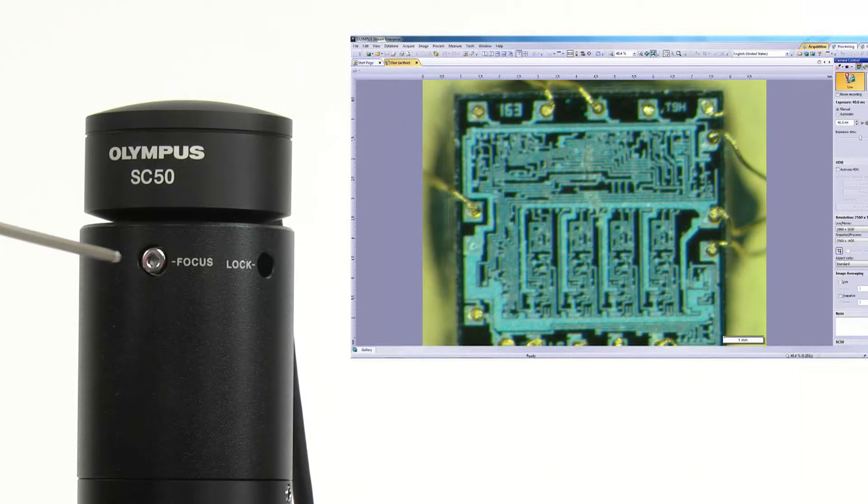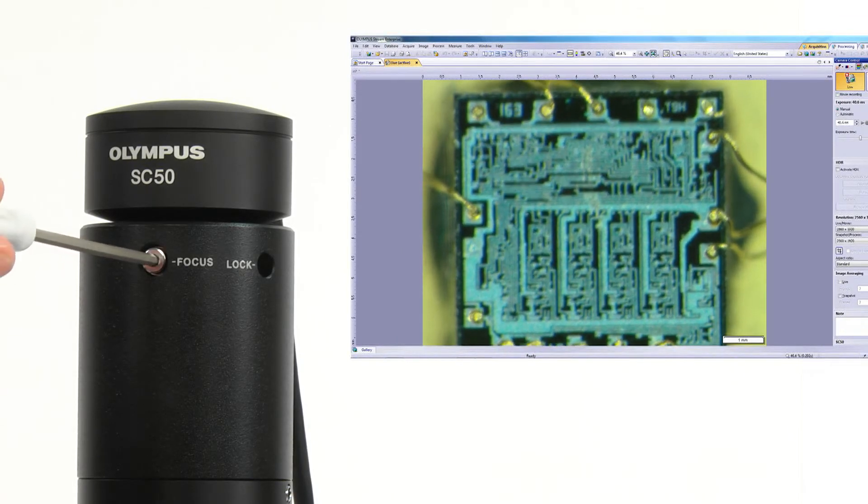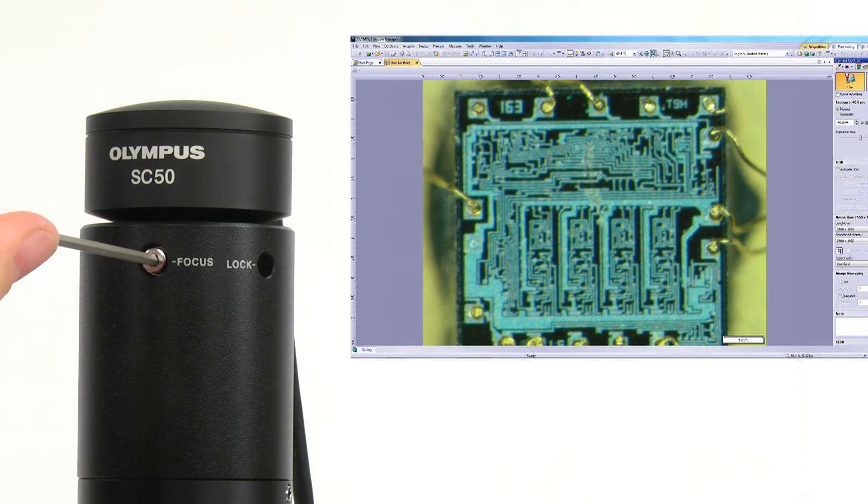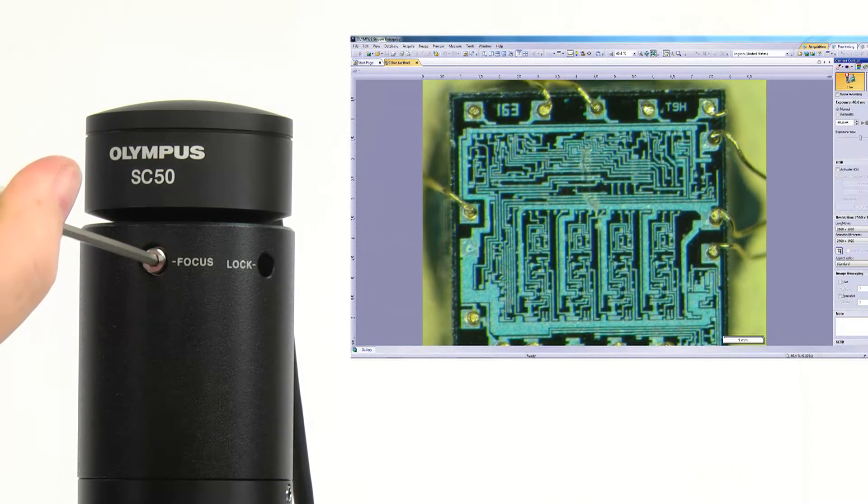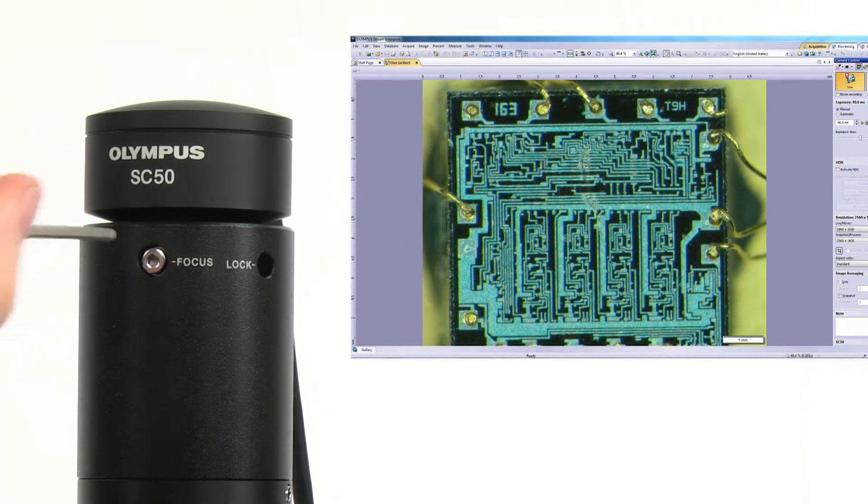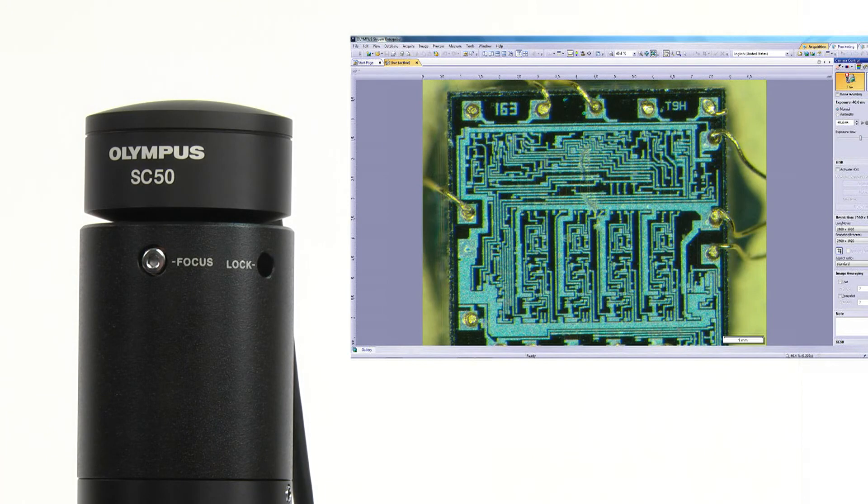To adjust, simply turn the focus dial on the camera adapter until the image on the monitor screen is in focus. If your camera adapter has a locking mechanism, lock it into place.